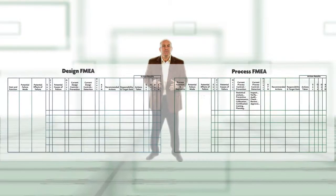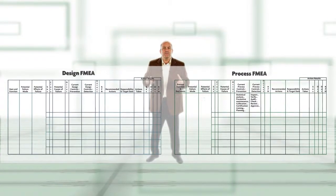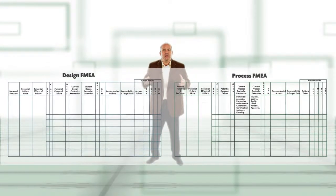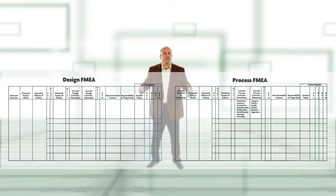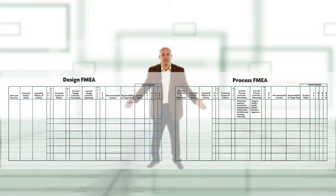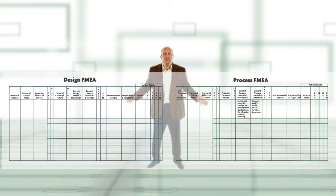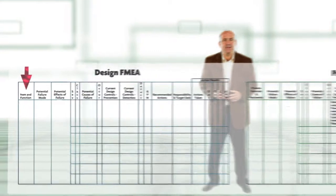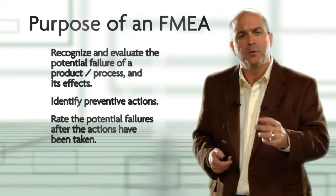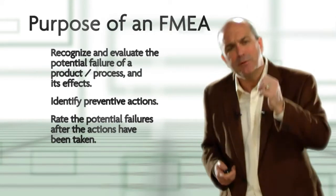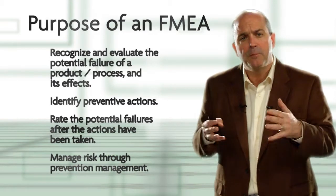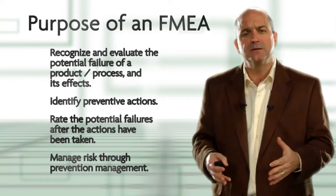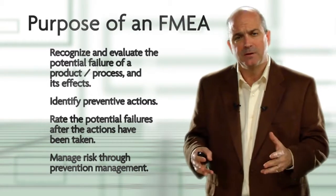If we show the two FMEA forms at the same time — with the design FMEA on the left and the process FMEA on the right — the only two main differences are in the first column. Another purpose is to allow us to manage risk by moving us away from management by crisis to prevention management.